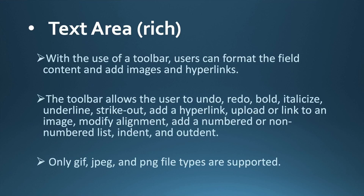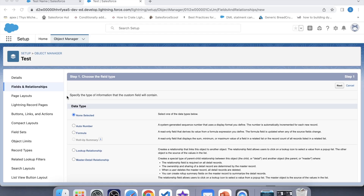Next is Text Area Rich. This data type allows the user to add images and hyperlinks. It also contains a toolbar by which you can format the field content — it allows the user to undo or redo, bold, underline, and many more actions. In this field, only GIF, JPG, and PNG file types are supported. The basic difference between Text Area Long and Text Area Rich is that Text Area Long fields are generally used for storing large amounts of plain text, while Text Area Rich fields are better suited for storing large amounts of data that need to be formatted with images.